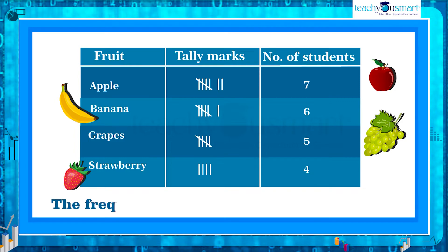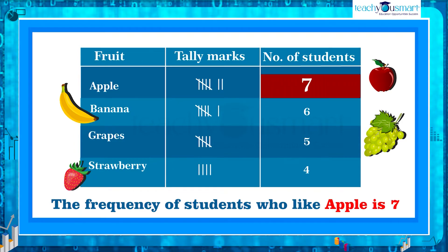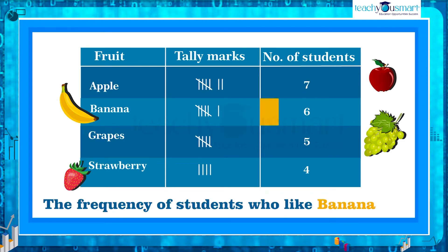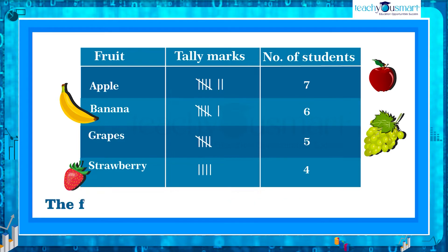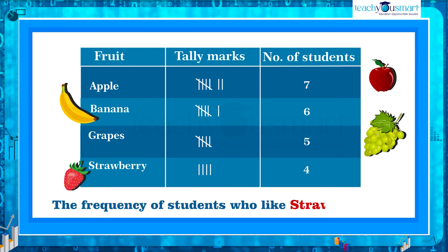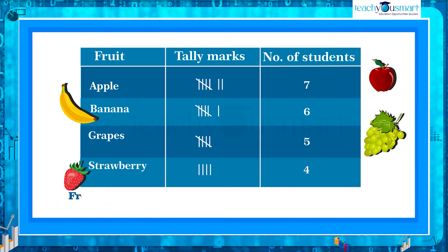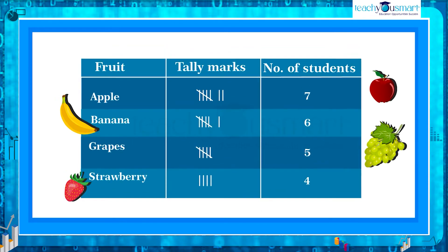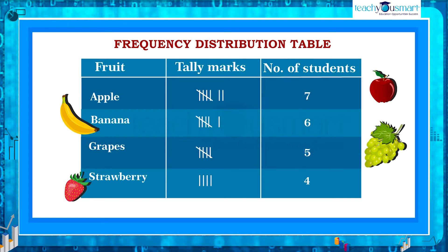The frequency of students who like apple is seven. The frequency of students who like bananas is six. The frequency of students who like grapes is five. The frequency of students who like strawberries is four. That is, frequency gives the number of times that a particular entry occurs. And the table made is known as the frequency distribution table, as it gives the number of times any entry occurs.